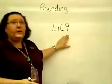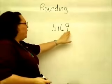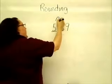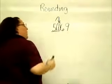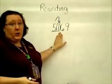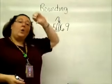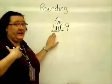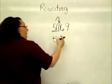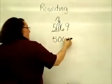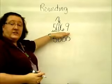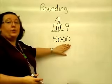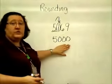The first step is to find our number by counting the places: ones, tens, hundreds, thousands. I go right next door. The one tells me what to do from the first line of the poem — four or less, let me rest. So I'm going to leave the five, my number, alone. And all of the other digits become zeros. Notice that I have four digits in my original number, and I also have four digits in the rounded number. This will be the case most of the time.